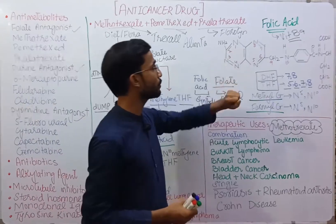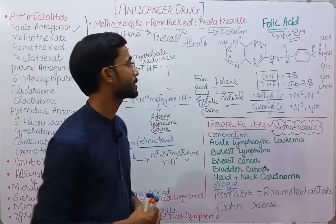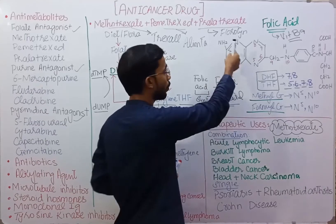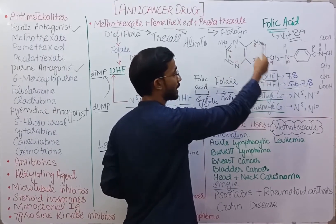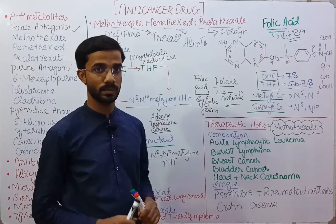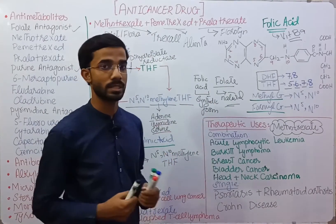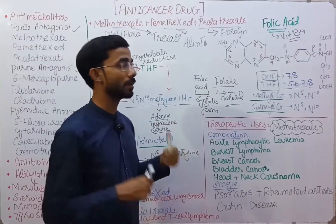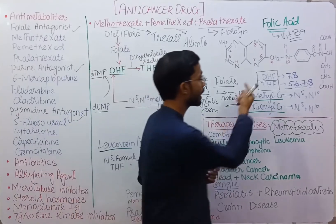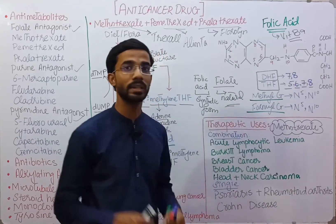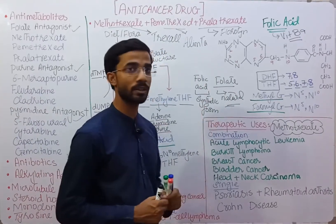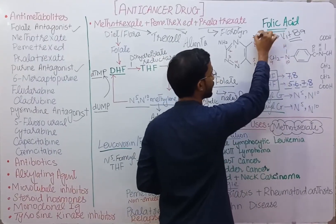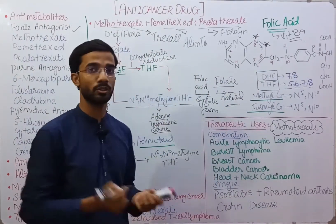The basic structure of folate has numbering starting from nitrogen: 1, 2, 3, 4, 5, 6, 7, 8, 9, 10. This is the general structure of folic acid. Some modifications occur and properties change. Dihydrofolate means 'di' equals 2 and 'hydro' means hydrogen — addition of 2 hydrogens at positions 7 and 8 forms dihydrofolate.